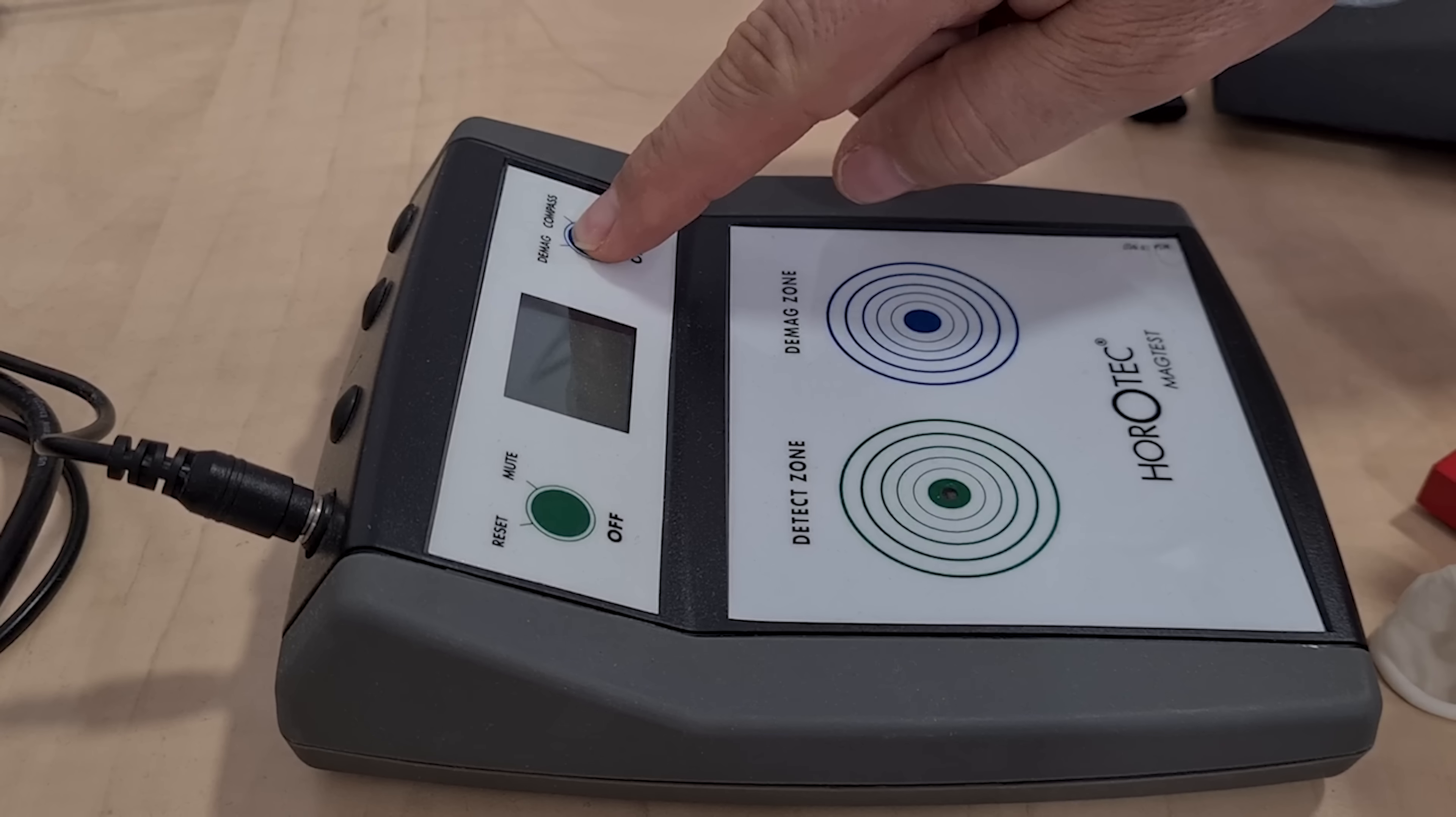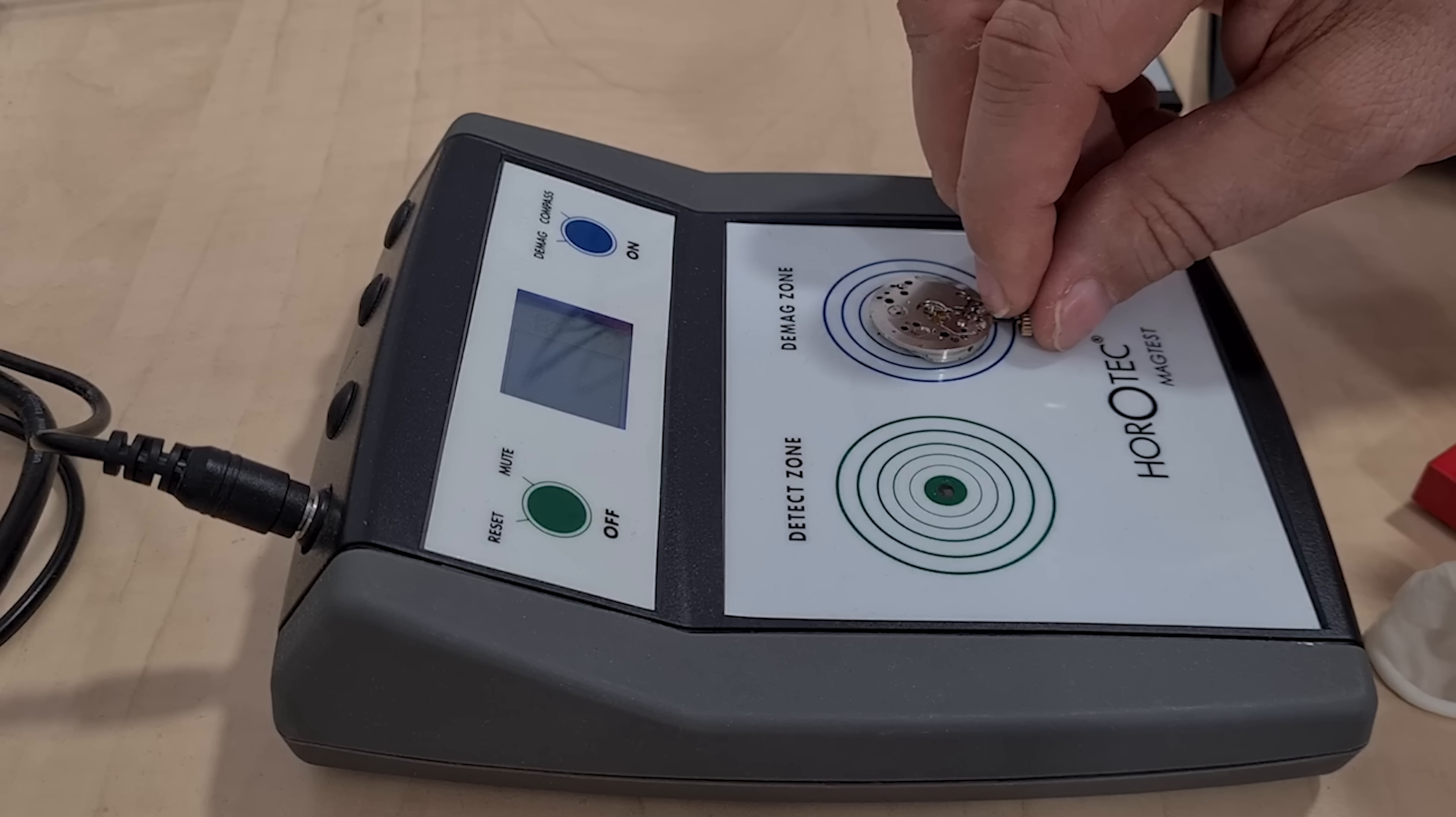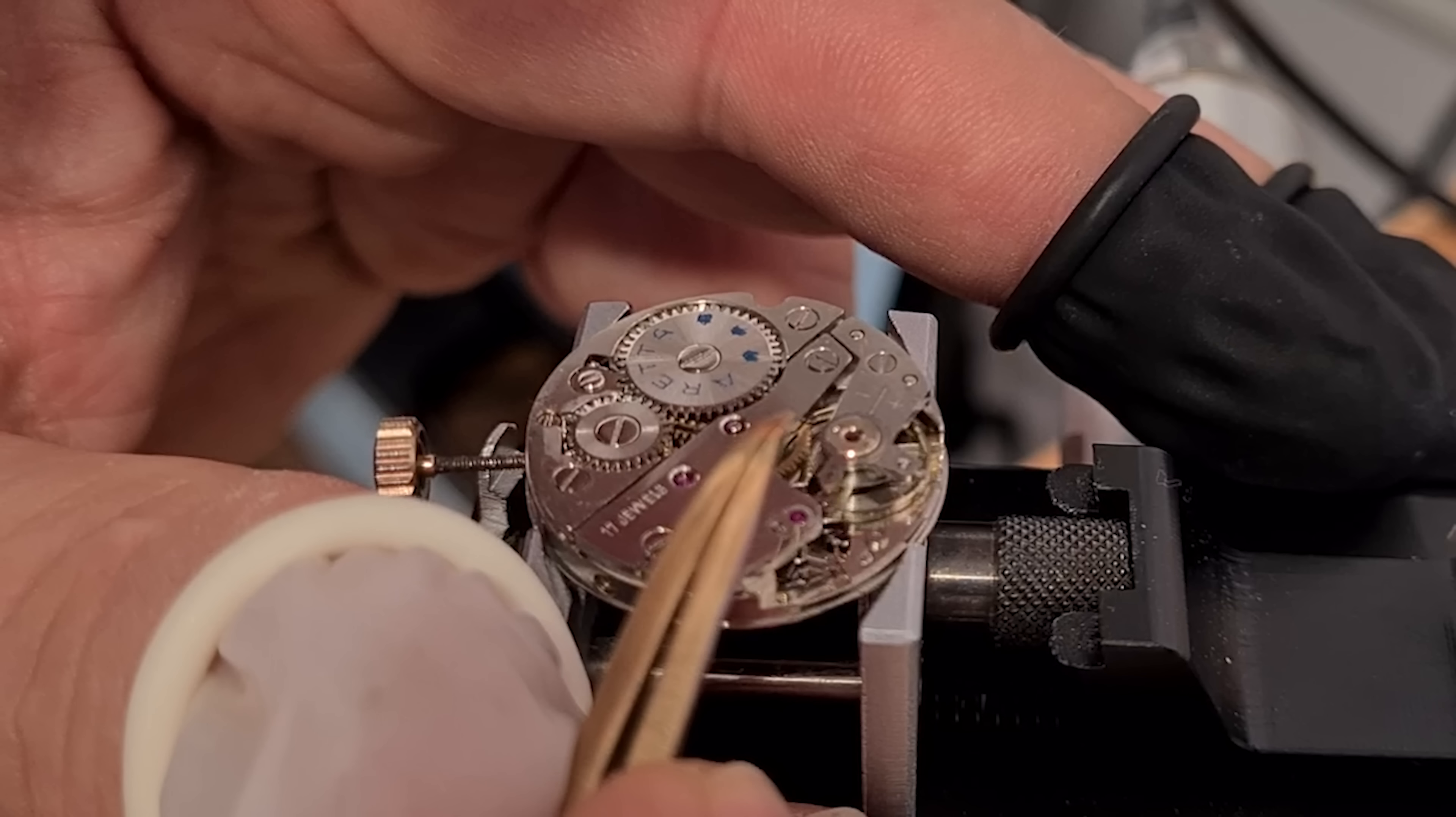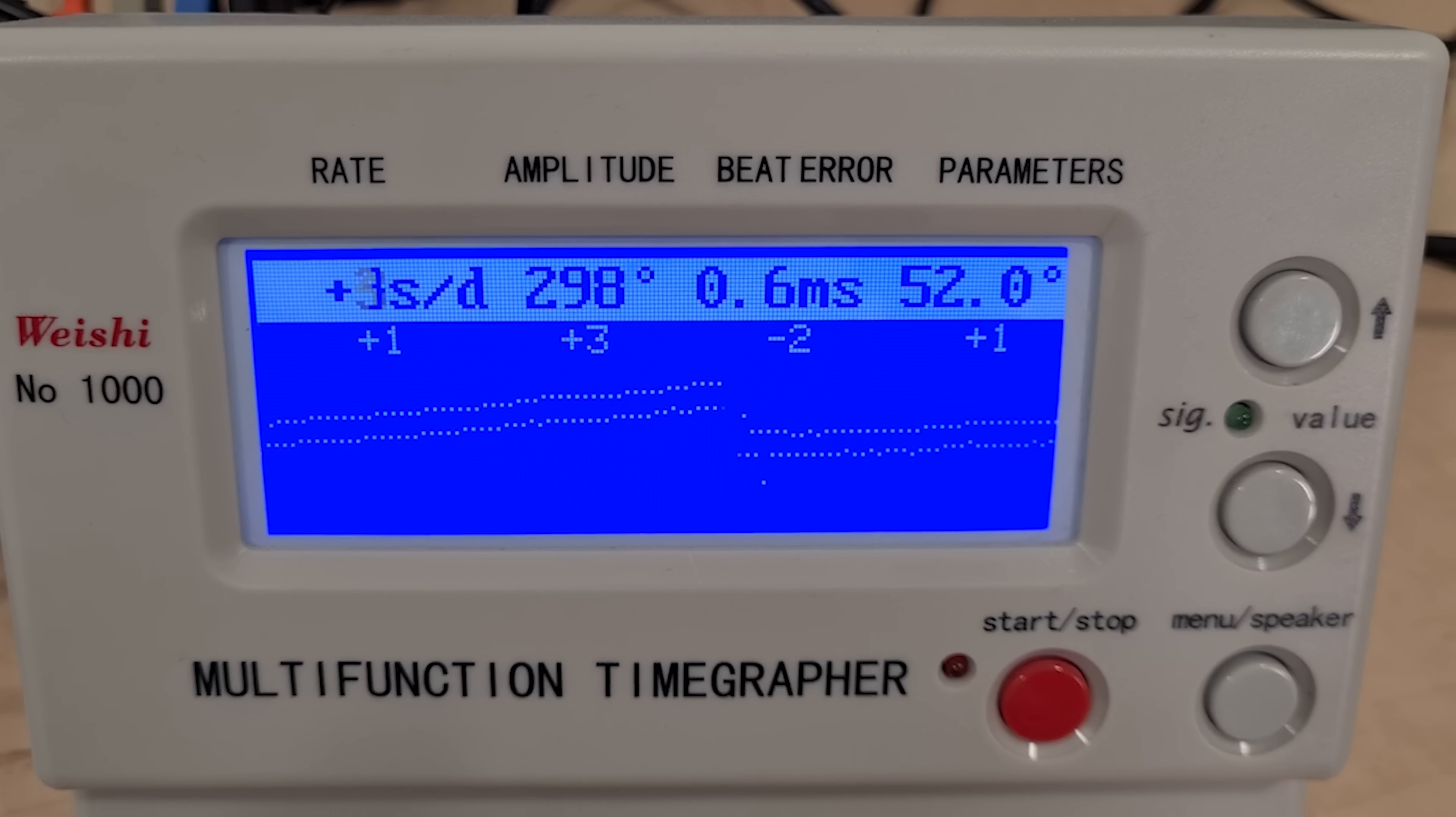With the watch running, we're going to oil the rest of the jewels, the bearings. Again, this is of course to minimize friction. Then we can give the watch a little bit more of a wind and then put it on the timegrapher. Well actually, we're first going to demagnetize the movement. There are a lot of sources of magnetism around us nowadays, so it's always a good thing to demagnetize the movement. If the watch is magnetized, it might run slow or fast, but it will not run well. This watch however runs pretty well.